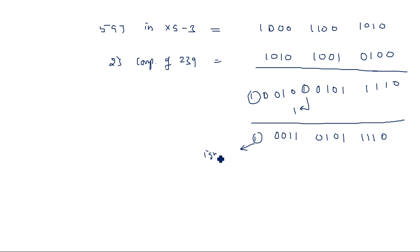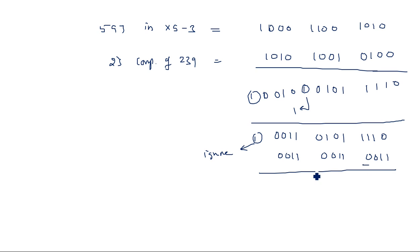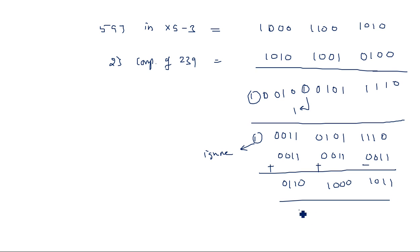Ignore this carry. Then for correcting values, add 3 here and subtract 3 here to convert back from XS3. The result is: first group is 3, second group is 5, third group is 8. So the answer is 358.